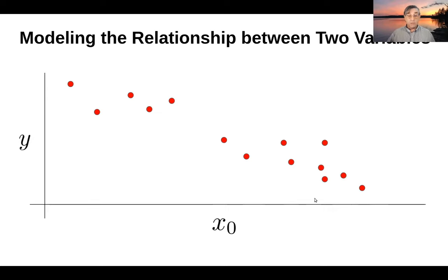And what we'd like to be able to do is build up a model that allows us to take as input an x0 and predict what y should be. The question is, what is that model? Typically, the first thing that we reach for when we're trying to model a relationship between two continuous variables is that of a linear model.